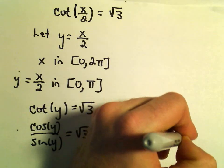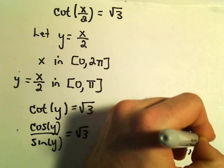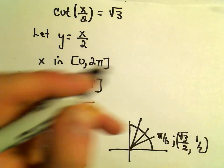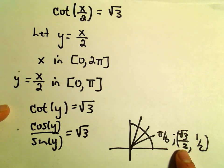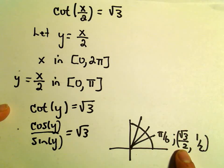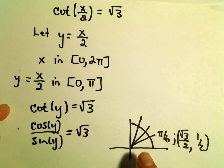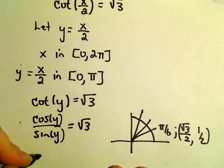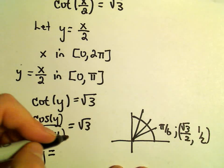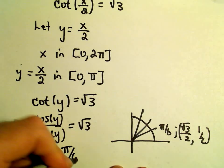So at pi over 6, that's where we get root 3 over 2, comma, 1 half on the unit circle. If I take cosine, that would be root 3 over 2, and divide that by sine, that would be 1 half. Well, root 3 over 2 divided by 1 half does equal square root of 3. So one solution to this equation would be at y equals pi over 6.